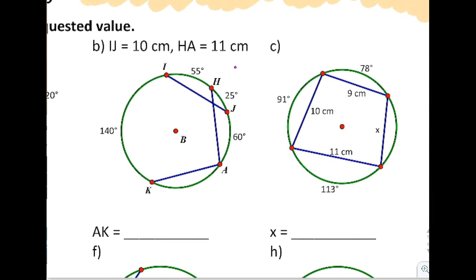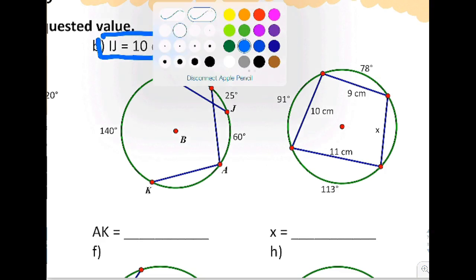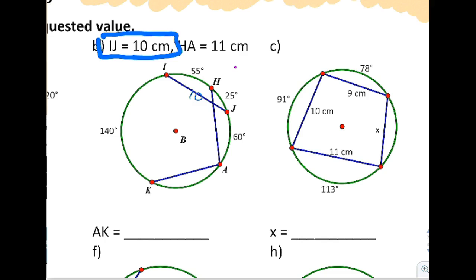In question B, it gives you some information up here. Don't ignore that IJ is 10 cm. If IJ is 10, and you notice the arc that it slices off is 80, right?